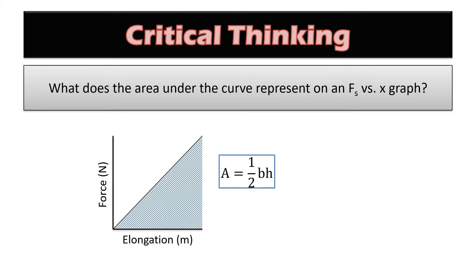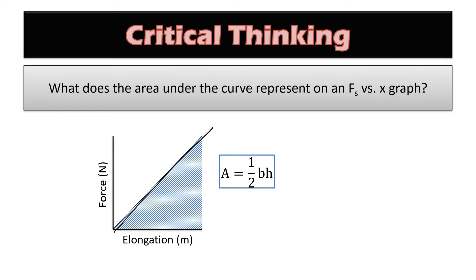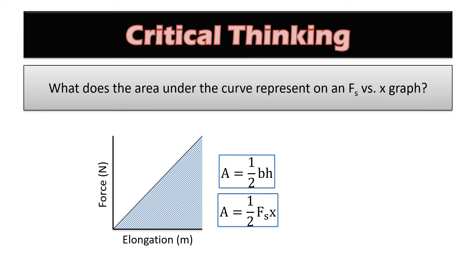The area under the curve in this case is a triangle, because as you stretch it out, it's a direct relationship — as you stretch it, the force increases. We talked about this with Hooke's law. So you always get this triangle shape with a nice spring. The area for a triangle is one-half base times height. The base is x — the elongation — and the height is the force.